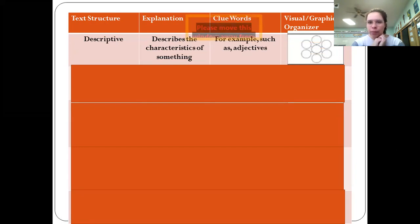The first type of text structure is descriptive. That's when they describe the characteristics of something. Say they're describing what a penguin's life is like. They would use adjectives, they might use the words 'for example' or 'such as.' If we were going to organize this in a graphic organizer, it might look a little bit like this picture right here where the subject is in the middle and then you have different ideas about that subject describing it surrounding it.